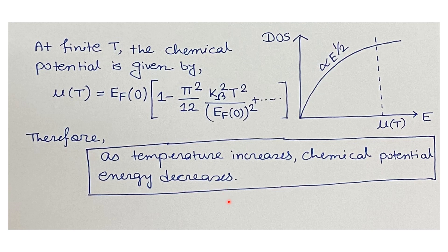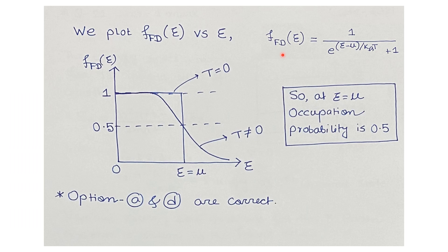Now we verify the other options. The Fermi-Dirac distribution function also gives the occupation probability of fermions: f(E) = 1 / (e^((E − μ) / k_B T) + 1). If we plot this occupation probability as a function of energy, it is a step function at T = 0 K — meaning all fermions occupy energy levels below the chemical potential. For T ≠ 0, the plot becomes a smoothly decreasing function, physically indicating that some fermions are thermally excited to energy levels above the chemical potential.